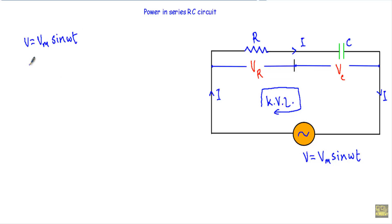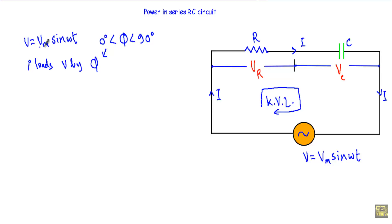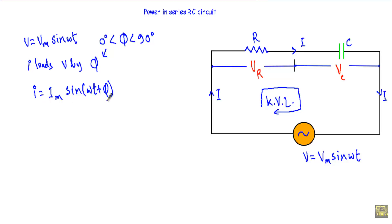In case of a capacitive circuit, our current I leads V by an angle of phi. The value of phi will be less than 90 degrees but must be greater than 0 degrees. As V equals Vm sin(ωt), to specify that I leads V by phi, I will write the current equation as I equal to Im sin(ωt + phi). This indicates that the current will have its origin phi degrees ahead of the origin of voltage V.